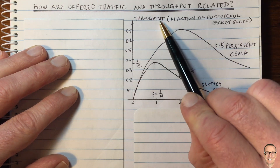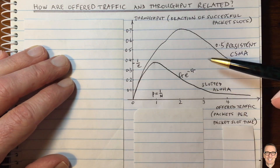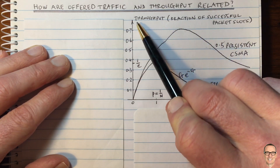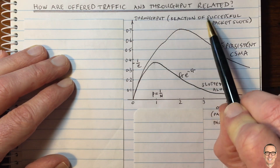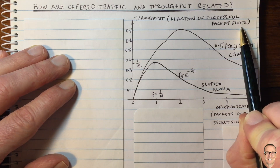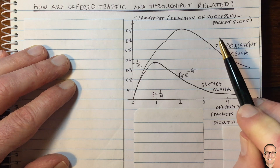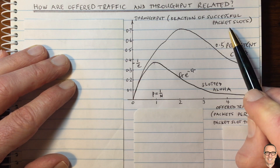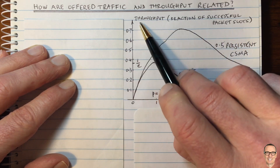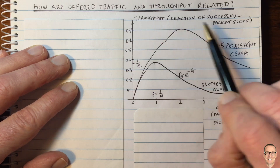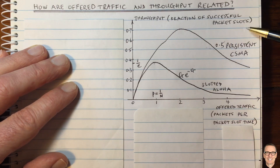So what is throughput? We're talking about a packet-based system, and for that scenario, the throughput is the fraction of successful packet slots. You have slots in the channel and they can be either used or not used by users sending packets. If they are used and the packet gets through successfully, it counts towards the throughput, but some slots aren't used and some are not successful.